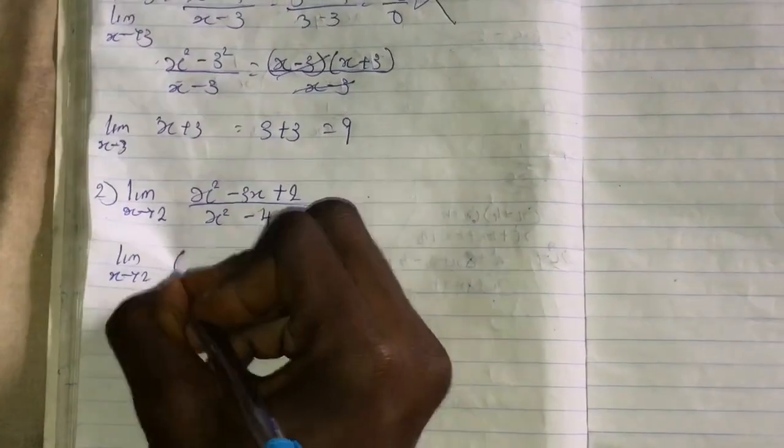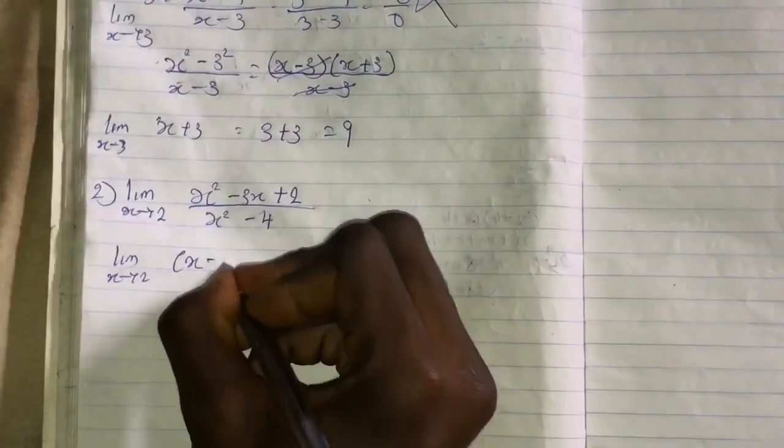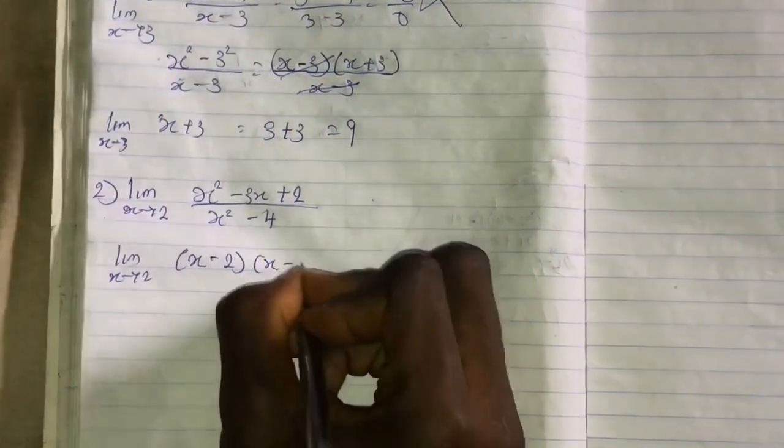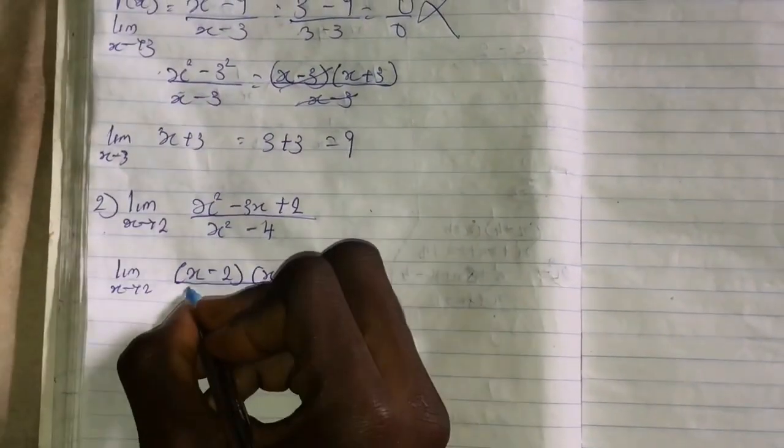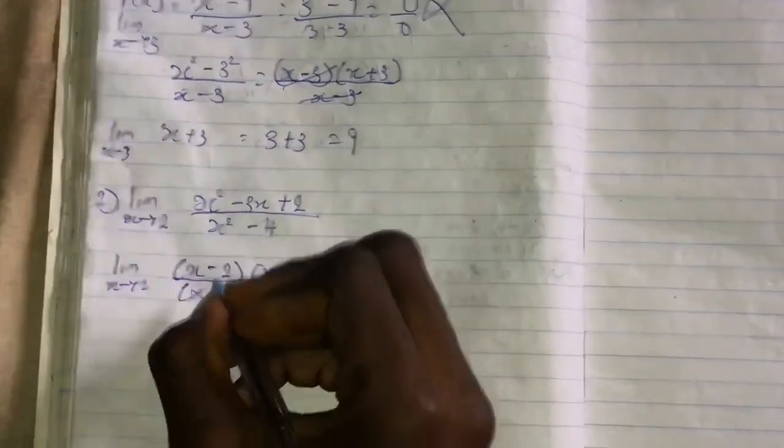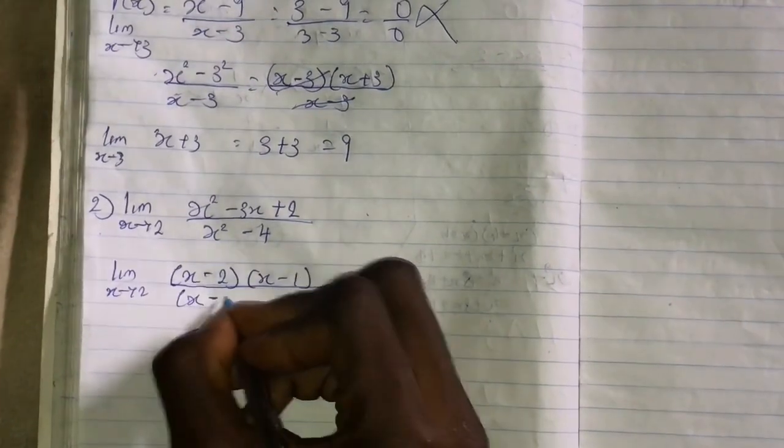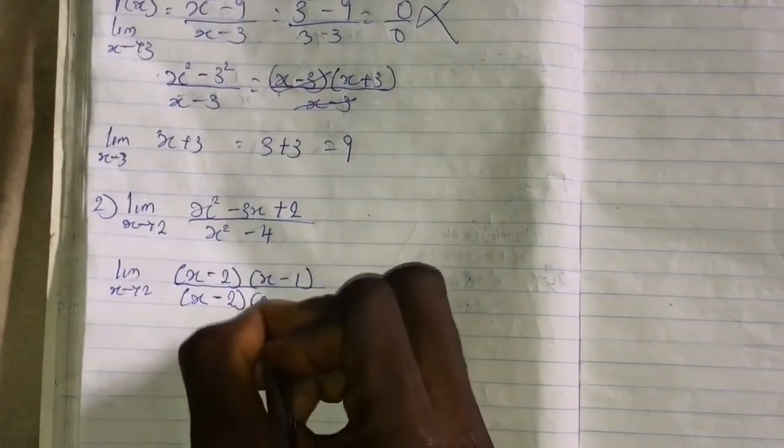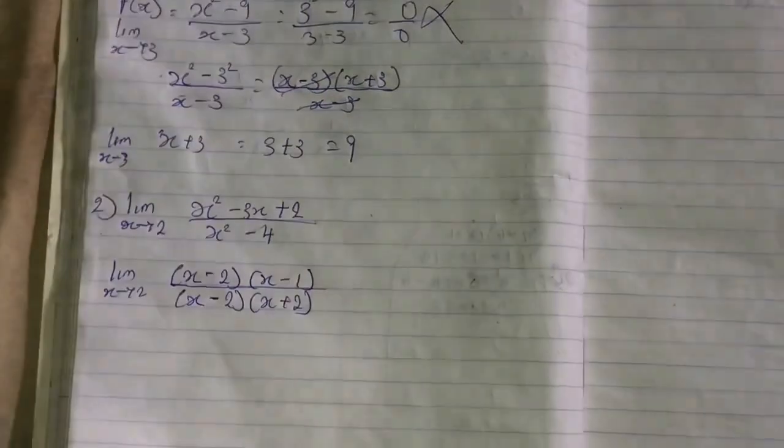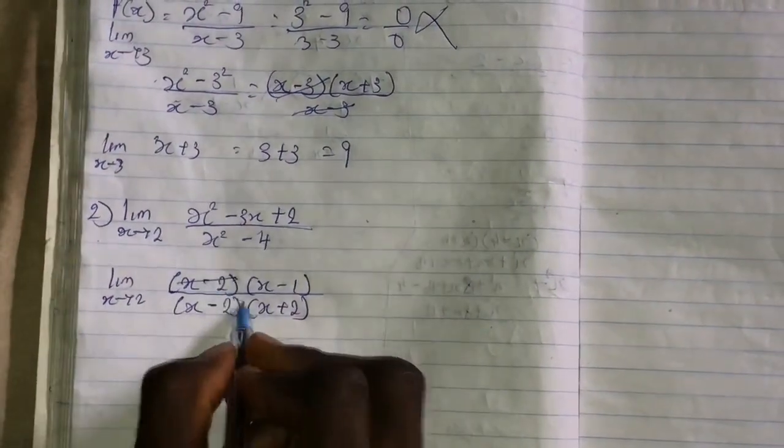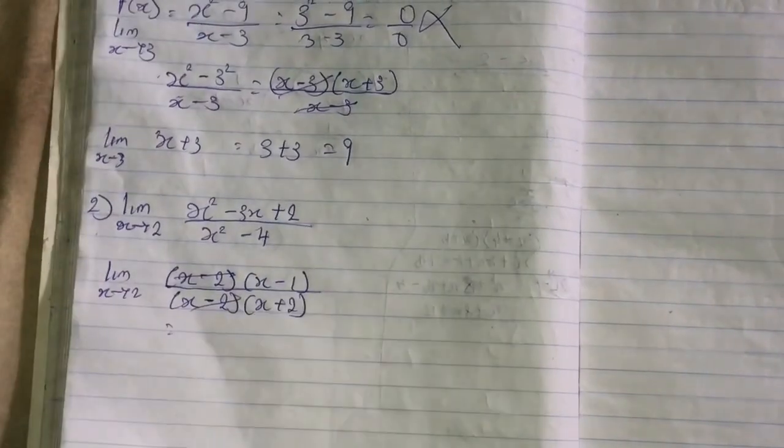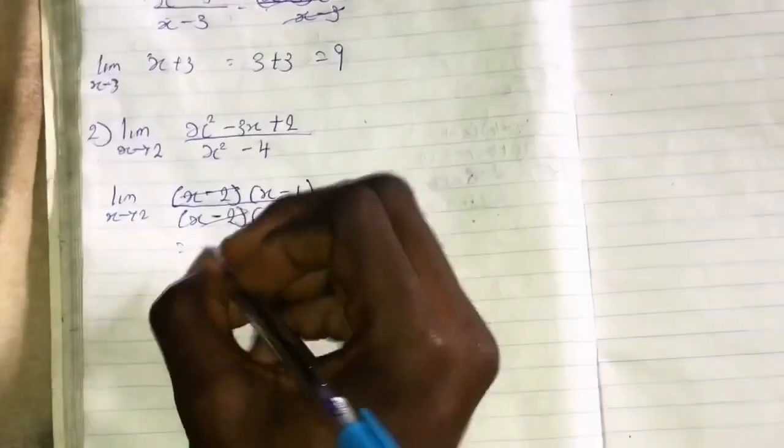So once you factorize this you'll be having (x - 2)(x + 2). This will cancel out this, so you are left with... I'm left with (x - 1) and (x + 2).